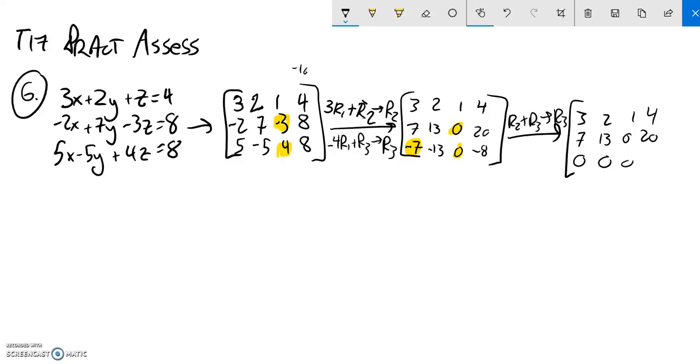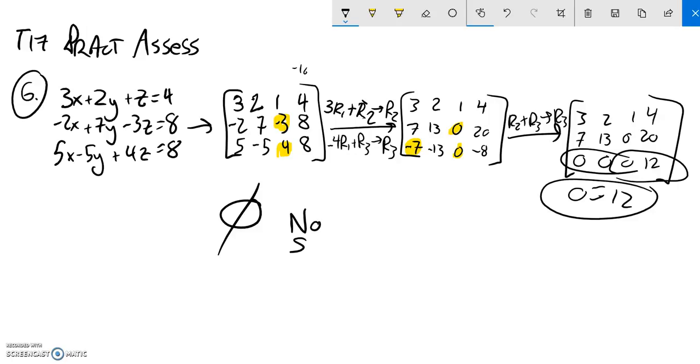If you'll notice what I have is something here that basically says 0 equals 12, which is nonsense. That means there is no solution to this. I can write the empty set or we can write no solution—both are valid ways to describe this problem.